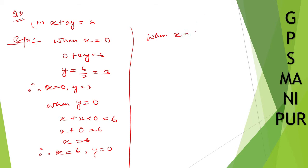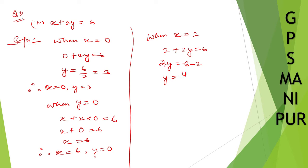When x is equal to 2, so 2 plus 2y is equal to 6. The 2 comes to this side as minus 2, so 2y is equal to 6 minus 2, which is 4, and divided by 2 gives y is equal to 2. Therefore x is equal to 2, y will be 2.